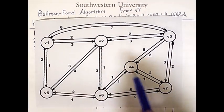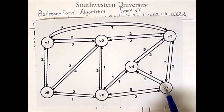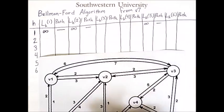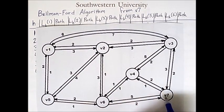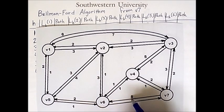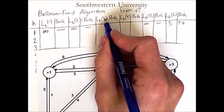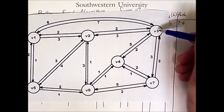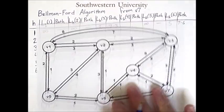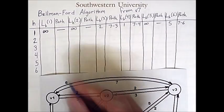The same is true for paths to v2 and v5. The only vertices we can reach from v7 in one hop are 4, 3, and 6. For v6, the cost of the one hop path is 5 because of its directed link. For vertex 3, the path is from 7 to 3 with a cost of 2. And to vertex 4, the cost is 1. That completes this row.